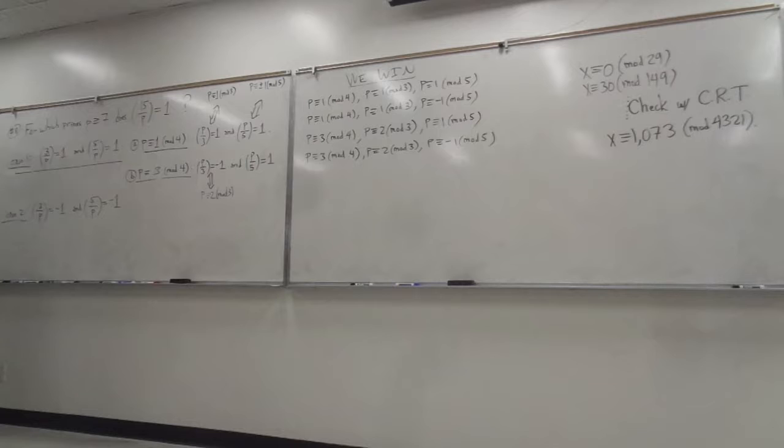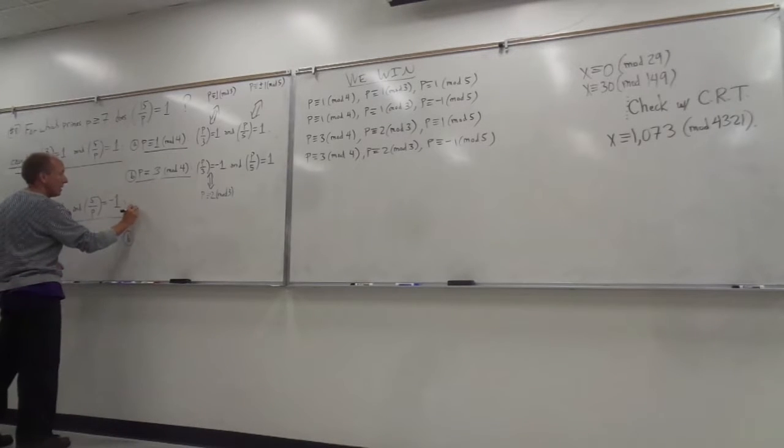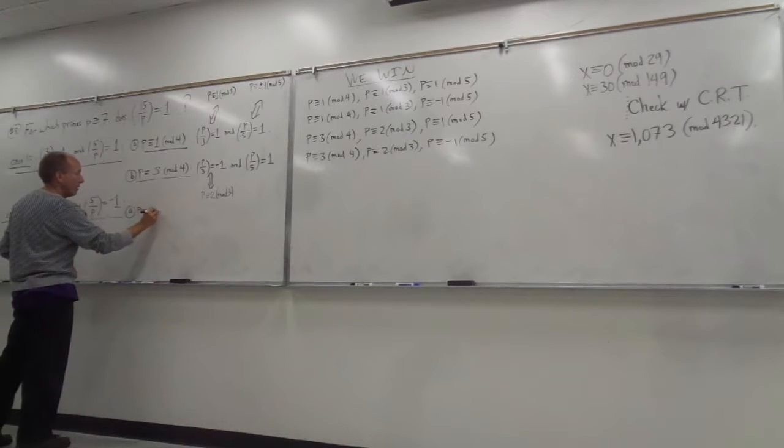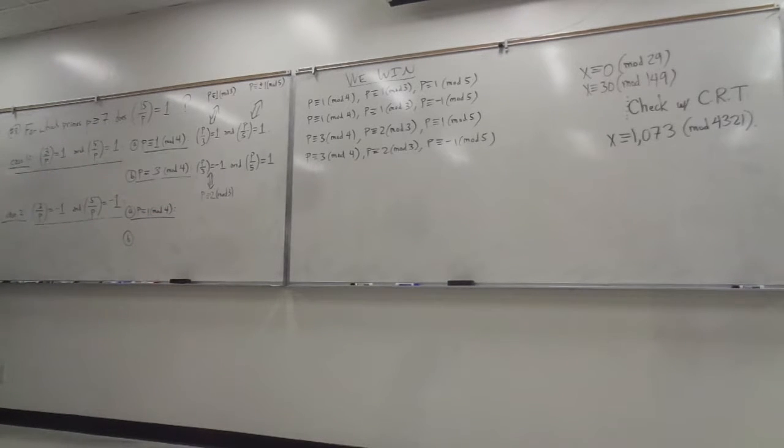Let's look at the other case. Four more cases. Four more cases here, because I'm going to have an a and a b again. P congruent to 1 mod 4. Let's look at that first.